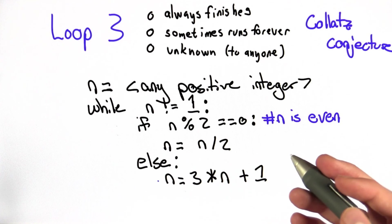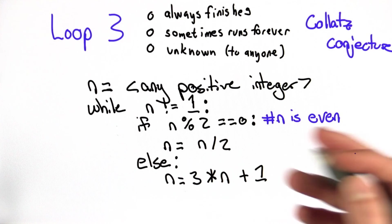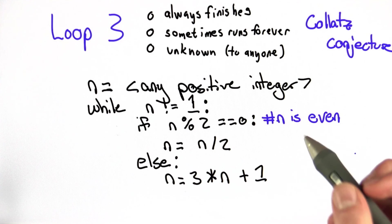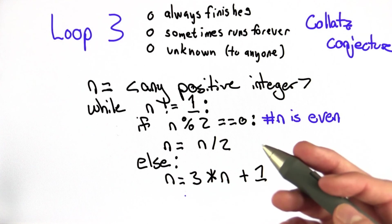It's an open mathematical problem, and no one has solved it. This is just an example of why a really simple loop like this is really hard to determine whether or not it terminates.